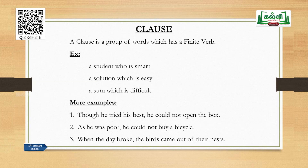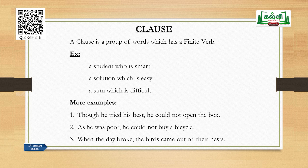More examples: 'Though he tried his best, he could not open the box.' Both parts have finite verbs — 'tried' and 'could not open' — so both are clauses, not phrases. 'As he was poor, he could not buy a bicycle.' 'Was' and 'could not buy' are both finite verbs — both parts are clauses. 'When the day broke, the birds came out of their nests.' 'Broke' and 'came' are both finite verbs — both parts are clauses. In these sentences we have no phrases, only clauses.